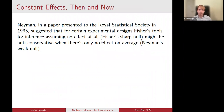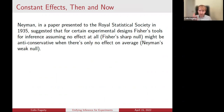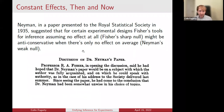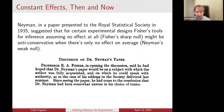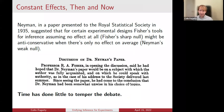Neyman certainly thought there were practical implications. In a paper presented to the Royal Statistical Society in 1935, he suggested that for Latin square designs and other experimental designs, if a practitioner used Fisher's tools for inference — valid even in finite samples for Fisher's sharp null — they might be anti-conservative when only there's no effect on average, i.e., Neyman's null holds but Fisher's null does not. This elicited an acerbic response from Fisher, published in JRSSB: 'Professor Fisher, in opening the discussion, said he had hoped that Neyman's paper would be on a subject with which the author was fully acquainted... he had come to the conclusion that Neyman had been somewhat unwise in his choice of topics.'